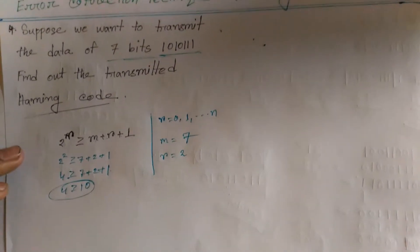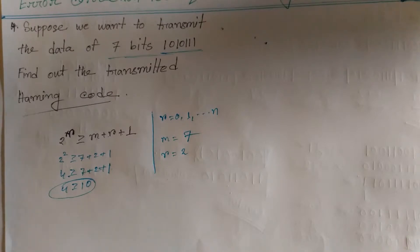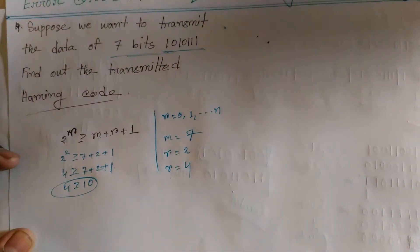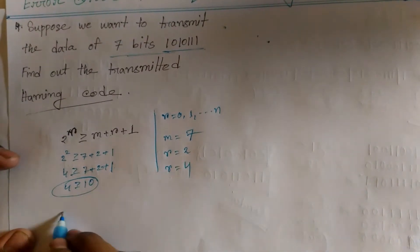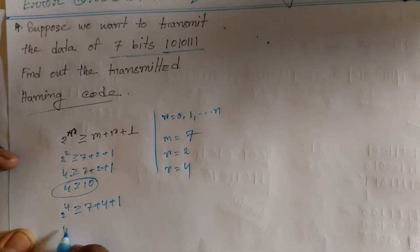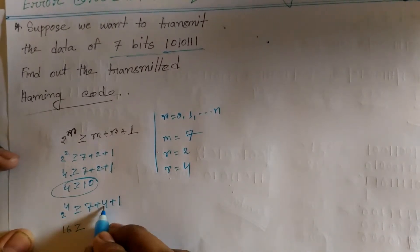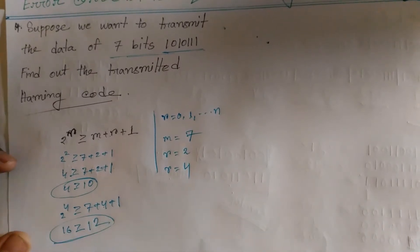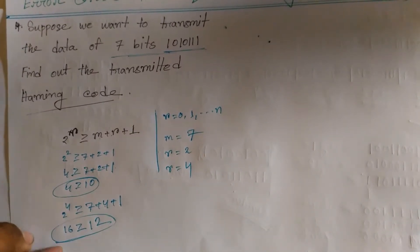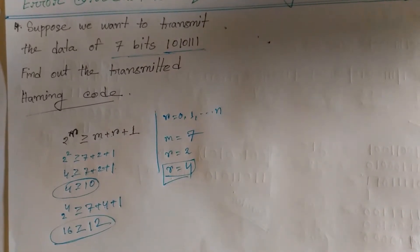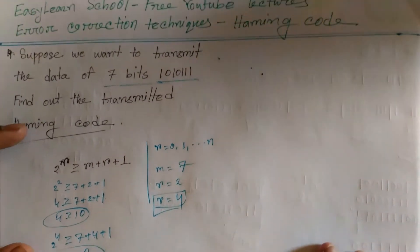So 2 to the power 4 equals 16, which is greater than 10. The condition is true. After finding the value of r, the condition is confirmed true. So 2 to the power 4 is equal to 7 plus 4 plus 1, which equals 12. The condition is true.